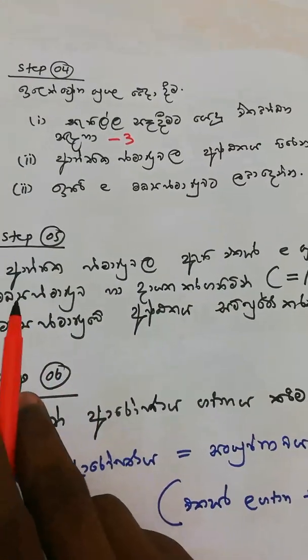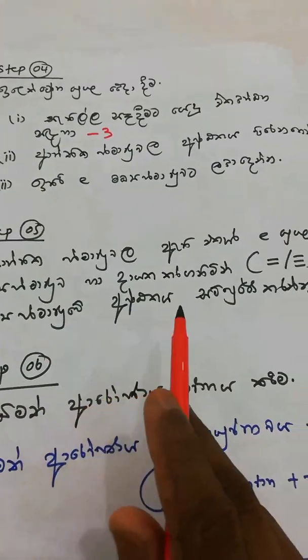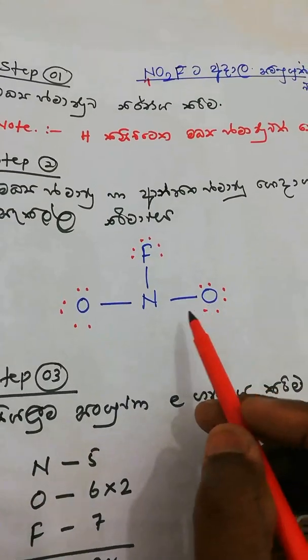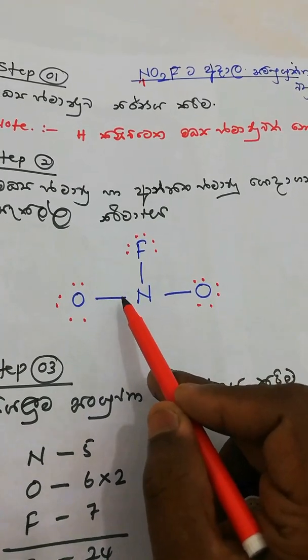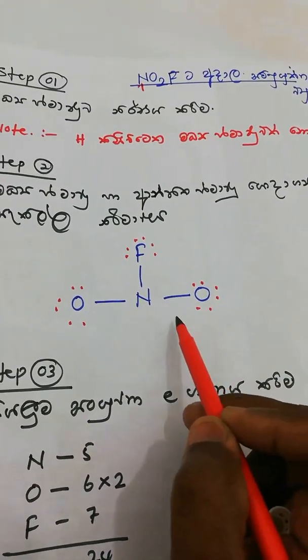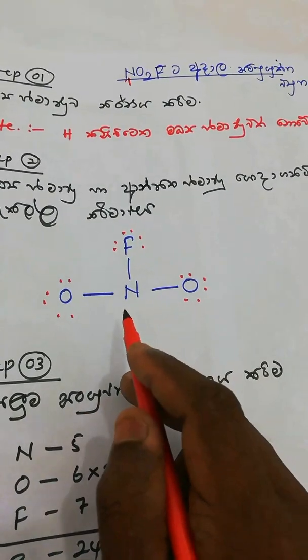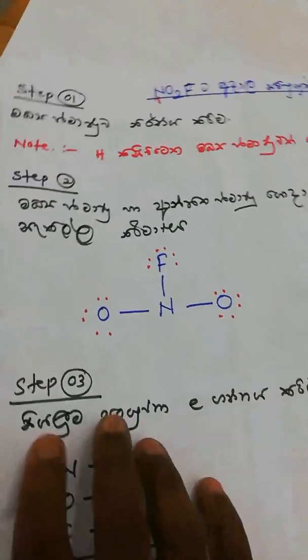If you want to show the sign of the dipole option, then you should be able to show the sign of the dipole option. So it is a sign of the dipole option — one option to show the sign of the dipole option. Now we have a one-way, just to say, we have a one-way.